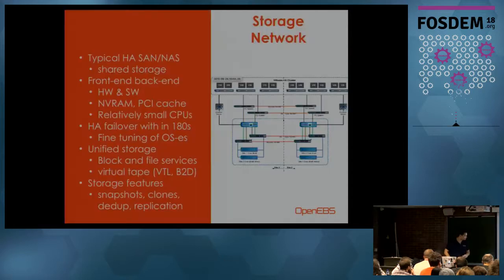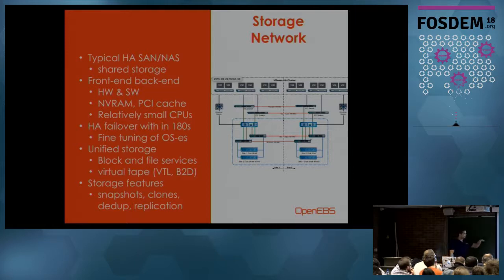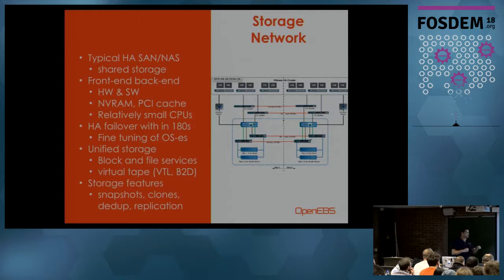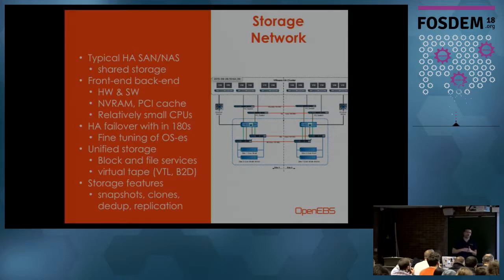Looking at a picture — the picture says more than a thousand words. At the bottom is the shared storage, not in the sense of sharing through NFS, but shared on a fiber channel level where the actual disks were visible on both controllers. So when you do an lsblk or something, both machines would see that disk. They were connected to the fiber channel switches all the way up to the controller — a front-end, back-end system.